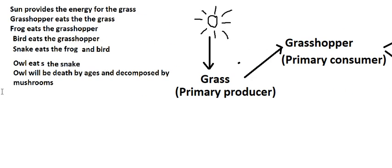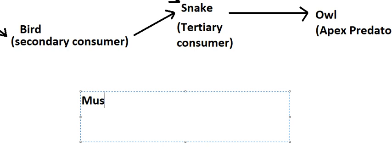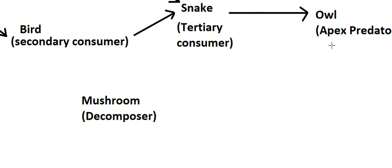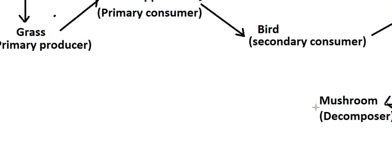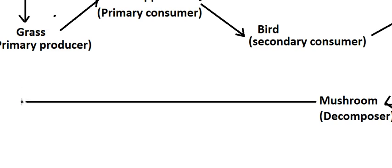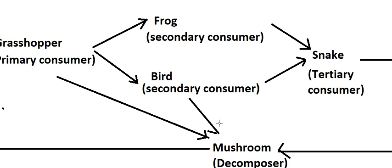And the last one: the owl will die of old age and be decomposed by mushrooms. So mushrooms are about decomposers. They also provide nutrients back into the soil for the grass. Sometimes the question will mention all of them becoming decomposed, because all of them can die of old age. So when the question asks about decomposers, the arrows will go like this, connecting all organisms to the decomposer.